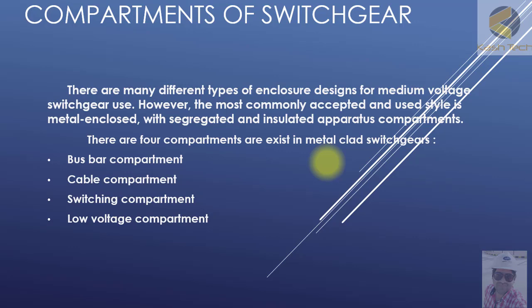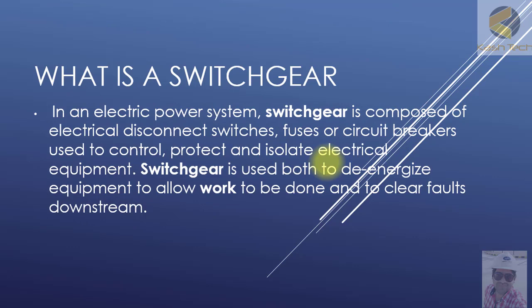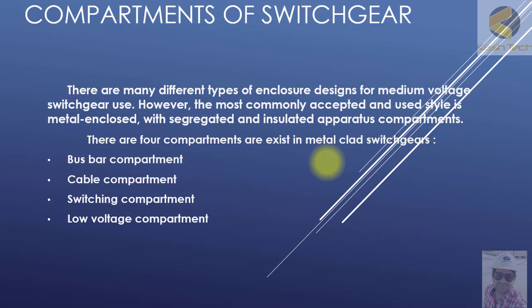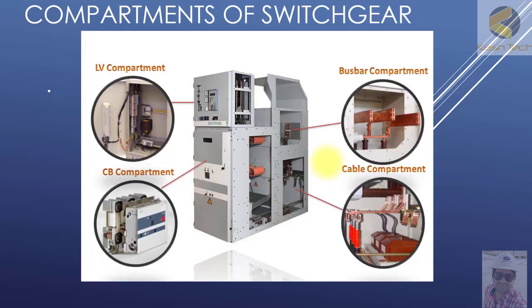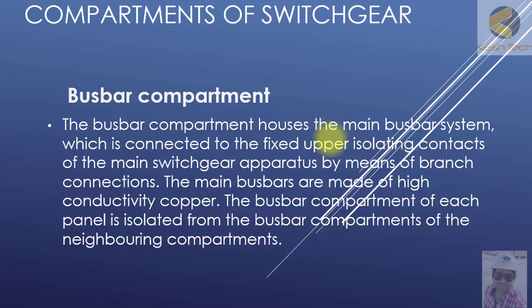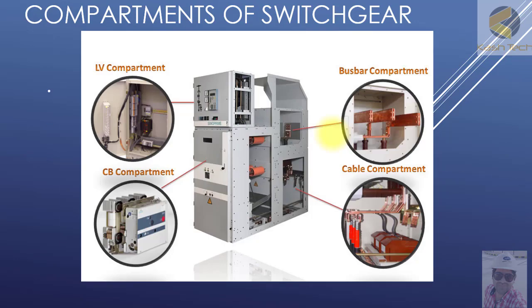Switchgear is divided into mainly four parts, and each part has some components. There are basically four compartments: the busbar compartment, cable compartment, switching compartment, and low voltage compartment. Further, we will define switchgear and then move on to the visual presentation, explaining in detail how the different compartments look.